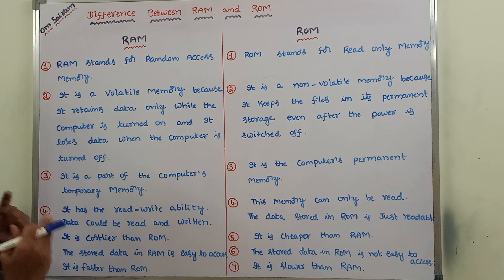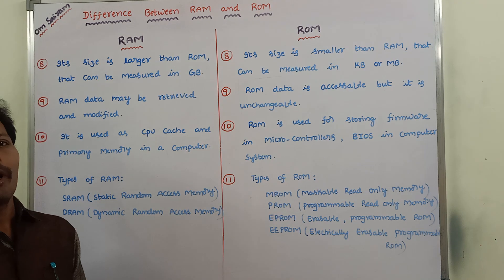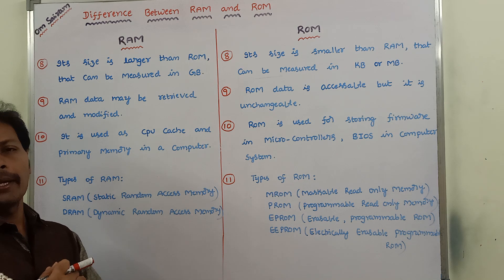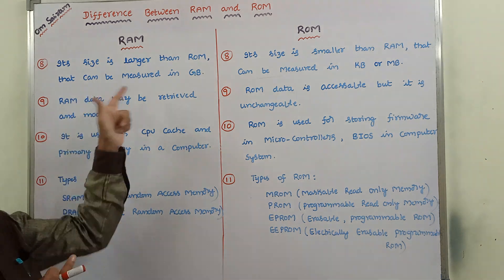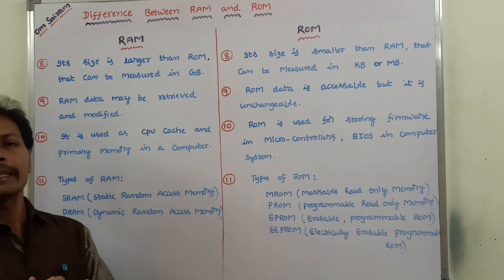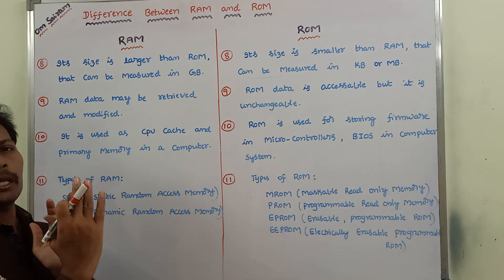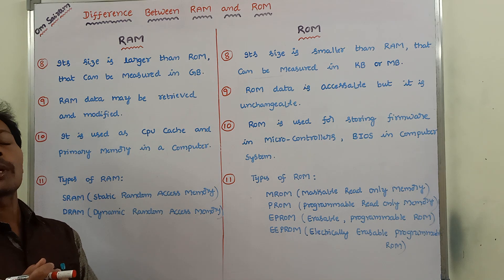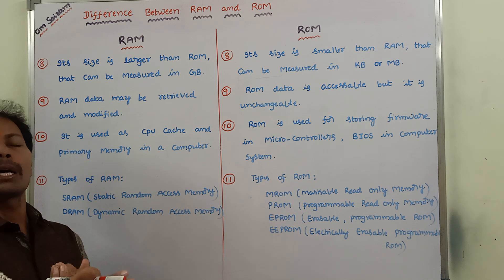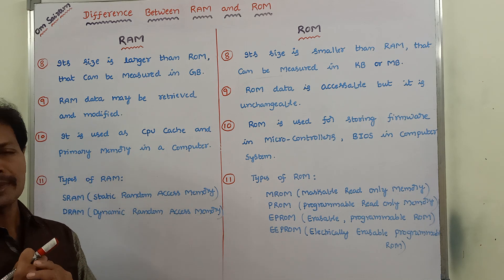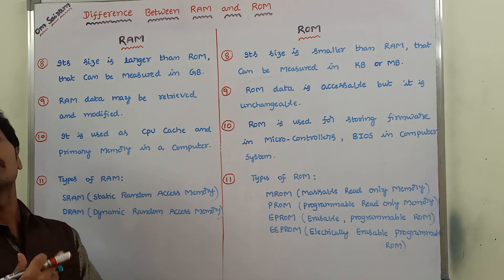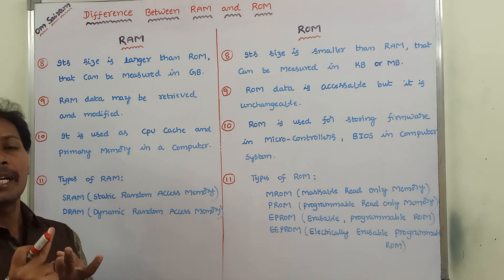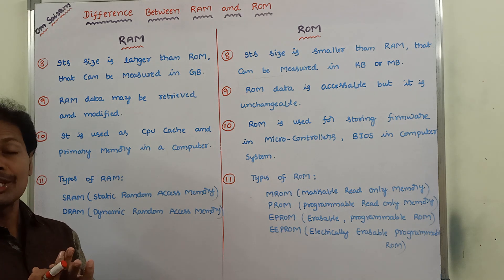Eighth point: RAM size is larger than ROM. Its size can be measured in gigabytes. Among RAM and ROM, RAM size is larger when compared to ROM size. RAM size examples include 4GB RAM, 8GB RAM, and 16GB RAM.